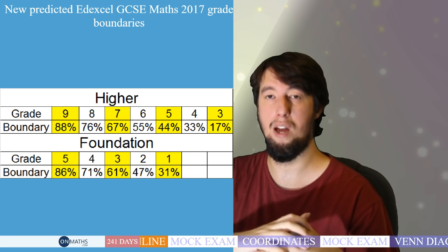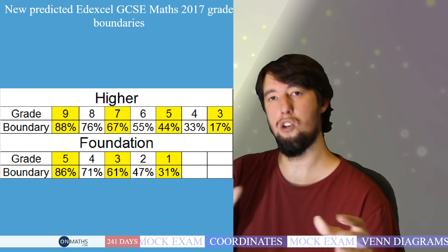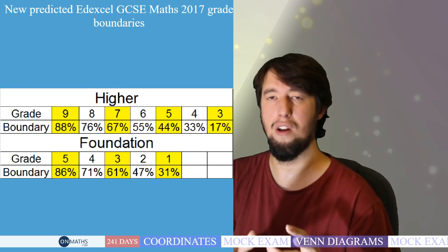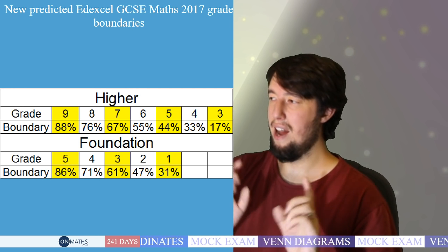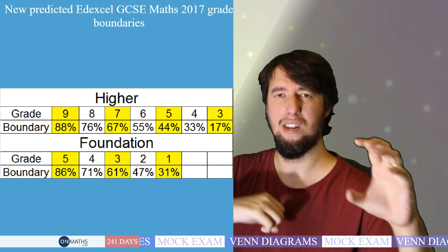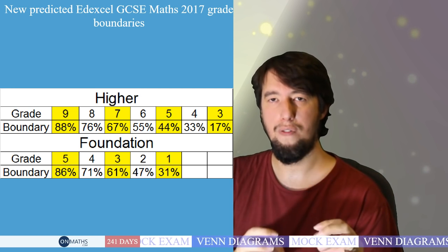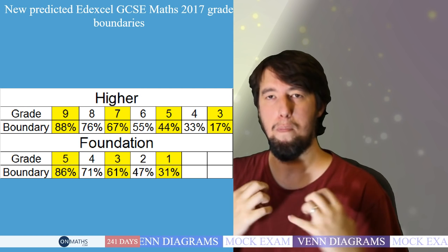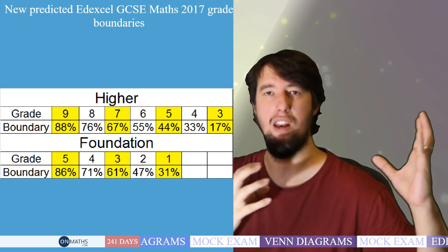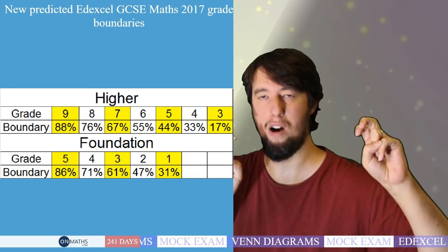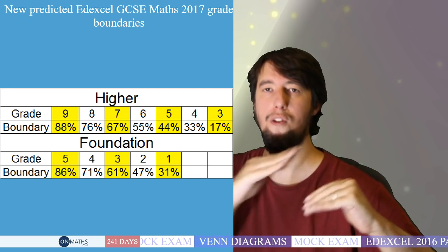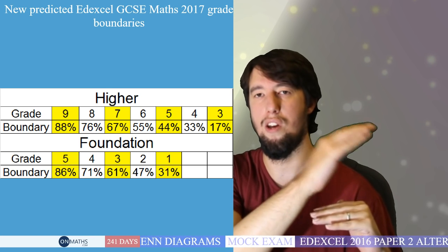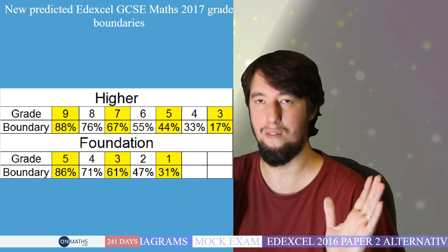Obviously if a student is likely to get a grade 5, they get entered for higher. But grade 4s and grade 3s are going to be a slightly different ballgame. The other thing to mention is that while I said a grade C was equivalent to a grade 4, grade 5 is the new grade C. The government have a plan of getting everyone up to Scandinavian countries' standard, where their pass mark is equivalent to a grade 5. Our C grade was equivalent to a grade 4 — it wasn't as stringent as the Scandinavian countries.